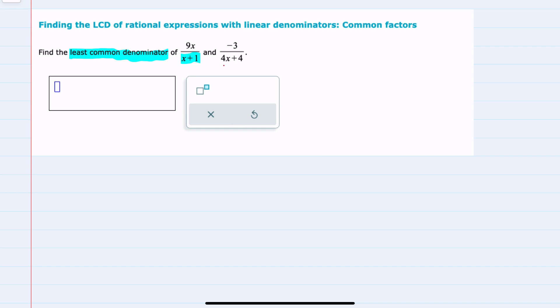However, the second denominator I can simplify by factoring out a 4. So I'm going to rewrite this second fraction as negative 3 over factoring a 4 out of that denominator would leave me with...